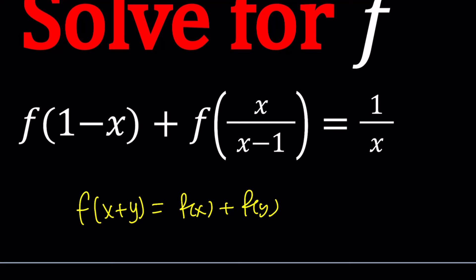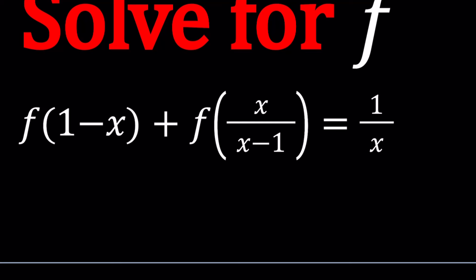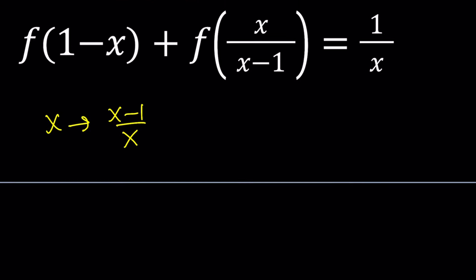Let's see how we can solve this problem. Notice that I have 1 minus x inside the parentheses as an argument, x over x minus 1, and 1 over x. There are certain functions that if you compose them with themselves — f of f, f of f of f — at some point you get the identity function, which means you get a cyclic group. Let's start by replacing x with x minus 1 over x. You might be questioning why we would do this, but if you do, you're going to get something interesting.